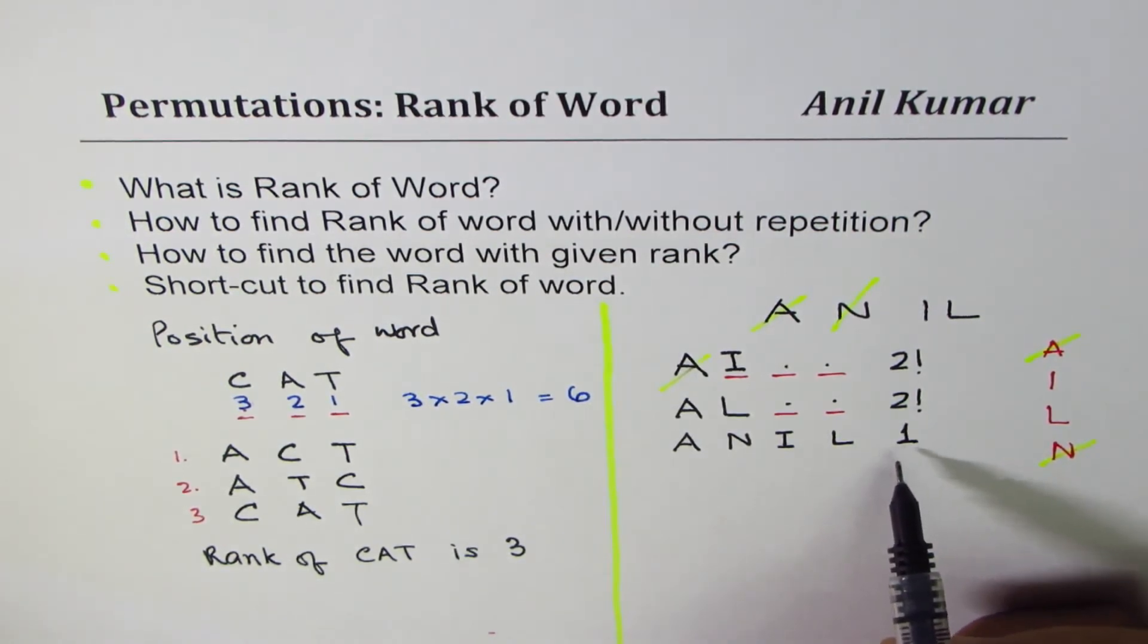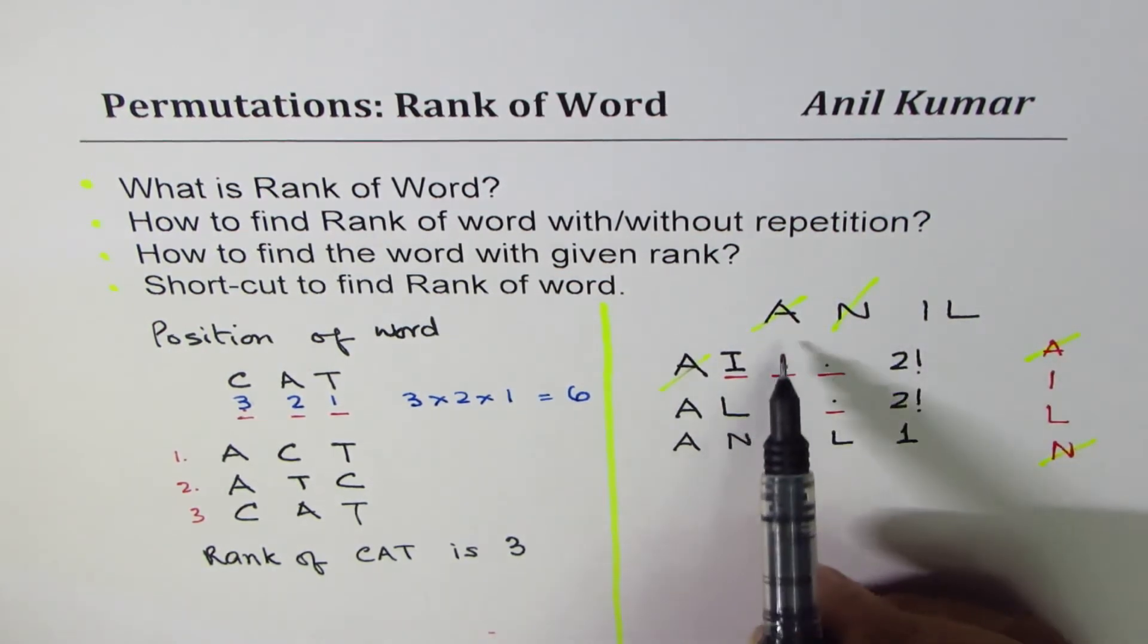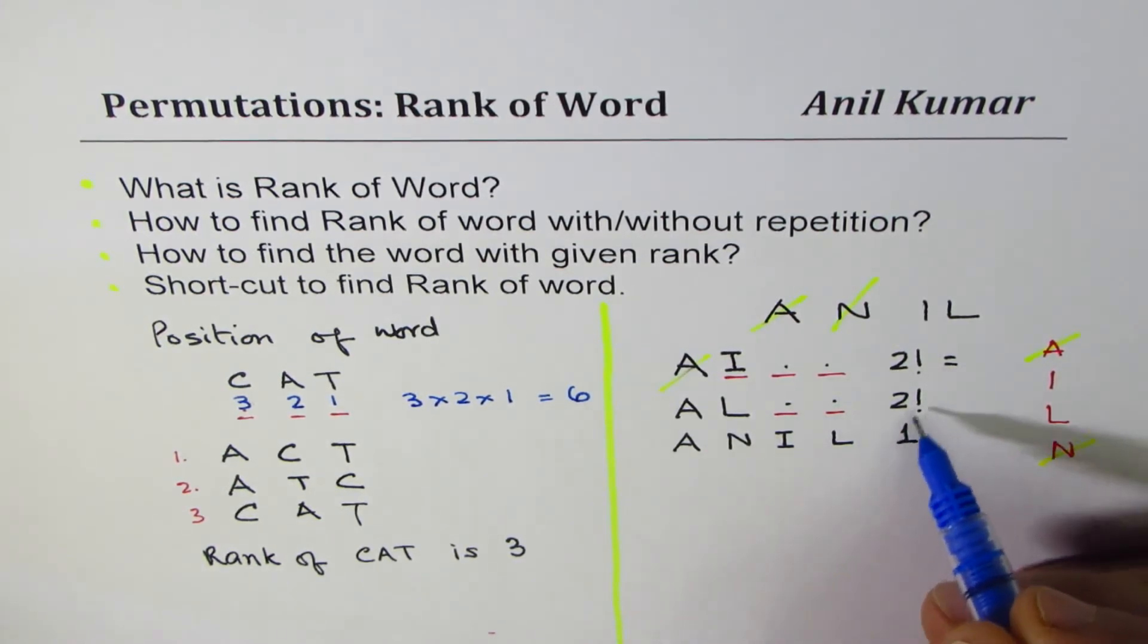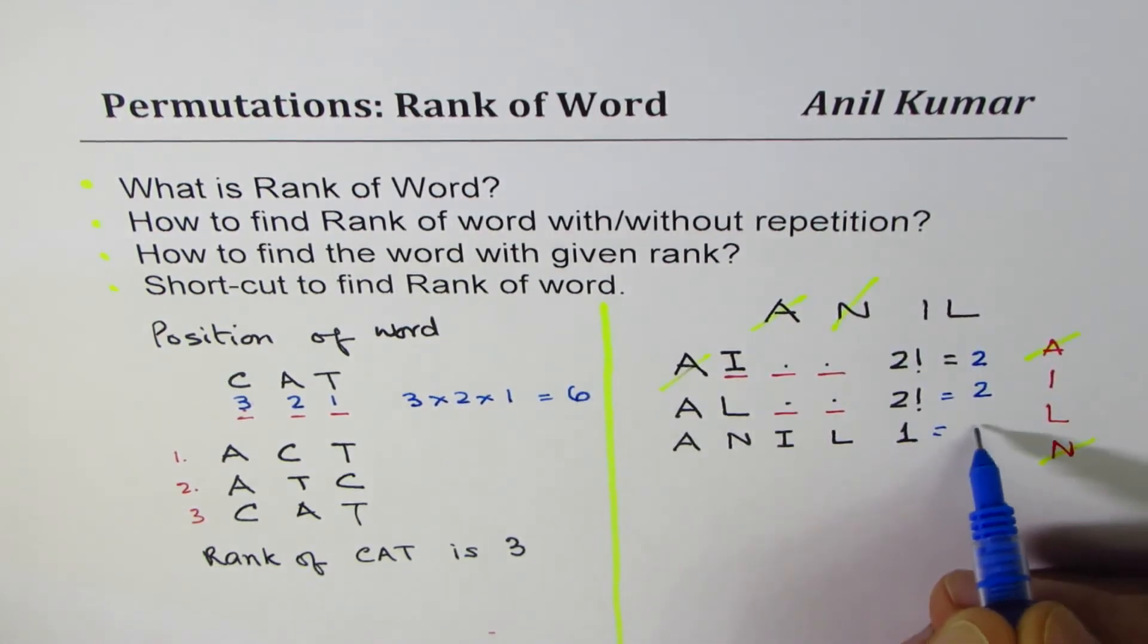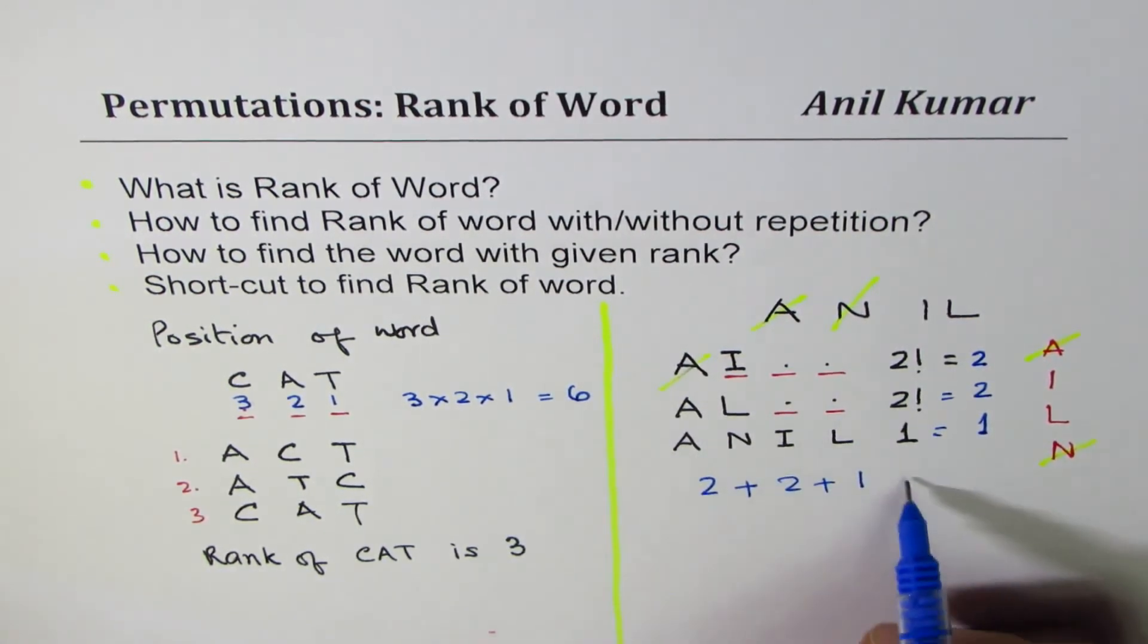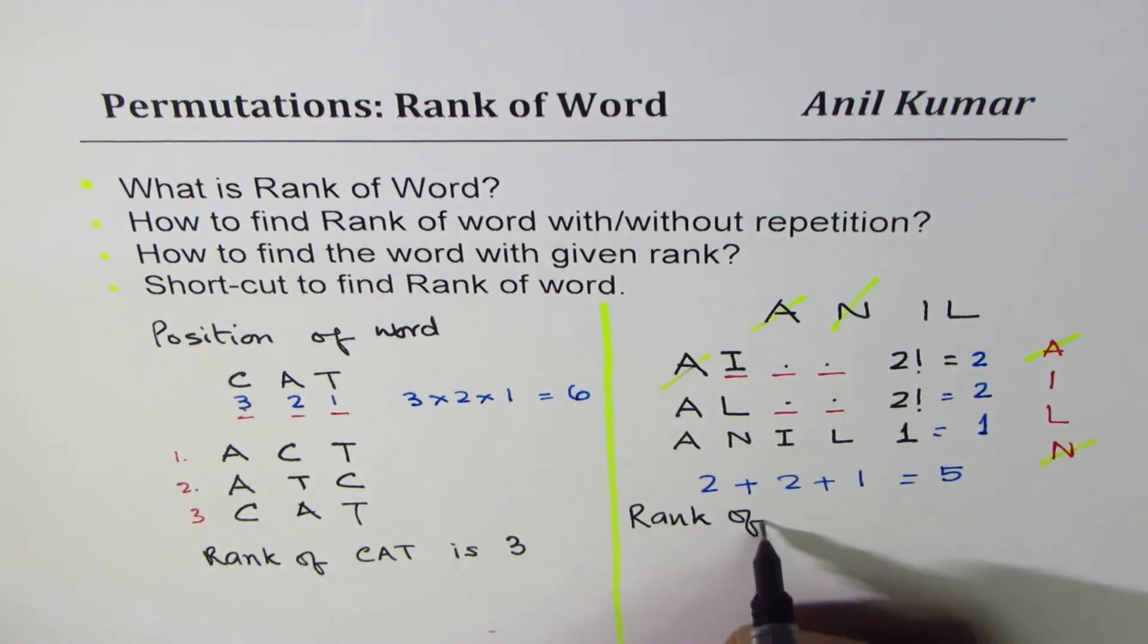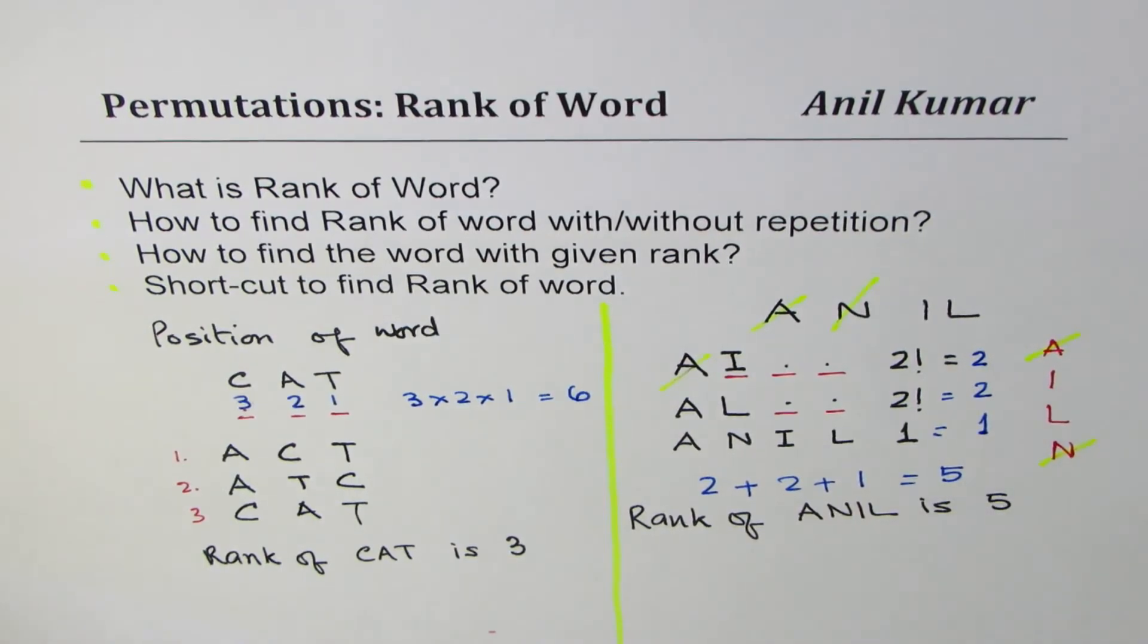So we say that the order of ANIL should be its position from the combination of words arranged alphabetically made from the letters in ANIL. So two factorial really means what? Let's count how many words have come before ANIL. So two factorial is two, two factorial is two, and the position is plus one. So we get the rank as two plus two plus one, which is equal to five. And we say rank of ANIL is five.